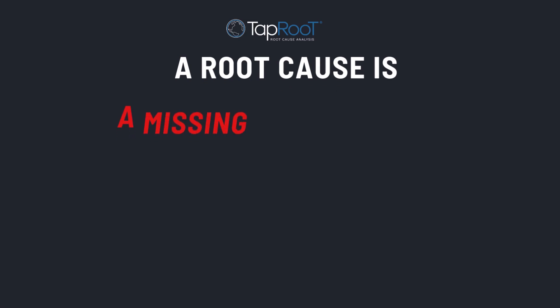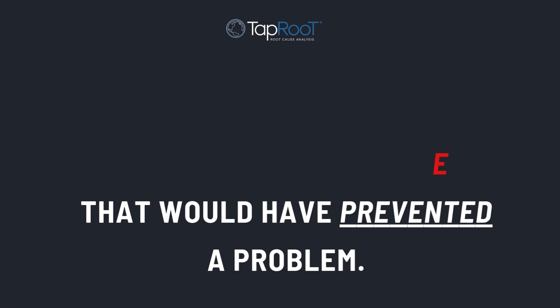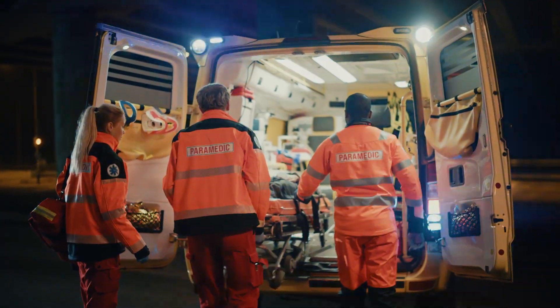I want to start with the definition of a root cause. How do we know human error is not a root cause? We need to look at the definition. What is a root cause? A root cause is a missing best practice or piece of knowledge that would have prevented a problem, prevented the incident, or prevented the consequences and severity of the incident. When we do root cause analysis, we're not looking for who to blame — we're looking for what's missing in our system that would have prevented the problem.